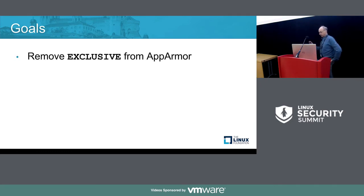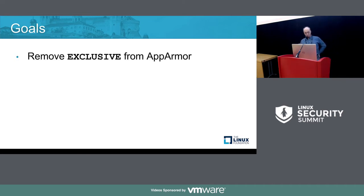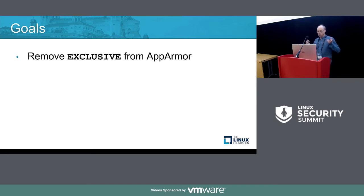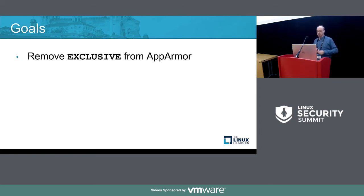Why is AppArmor our next target? AppArmor is different from SMAC and SELinux in that it is path name-based — less so now than it used to be, but it has a fundamentally different security model. SMAC and SELinux are based on subjects and objects, where the objects are things like the inode, whereas AppArmor is much more oriented toward path names. The profiles and use cases are different. So it does make sense, in some cases, to have SELinux and AppArmor together, or SMAC and AppArmor for certain configurations — which is why AppArmor is the next target to get the exclusive tag removed.